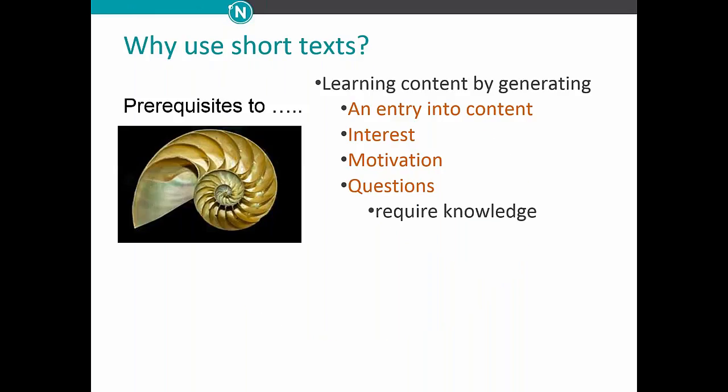We see short text as prerequisites to learning content. We learn content by generating information and generating thinking. We want students to ask questions — that's what we do under the C3 framework. We begin with a compelling question and supporting questions, but students don't know how to ask questions and can't ask questions about something they don't know. They have to have a knowledge base to draw from. So we use short text as an entry into content to build the contextualization needed to scaffold their curiosities and interests, to motivate them to want to choose to read, and to help them begin to have questions derived from the text.